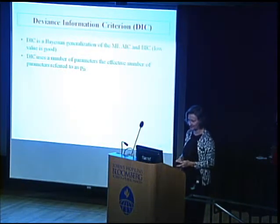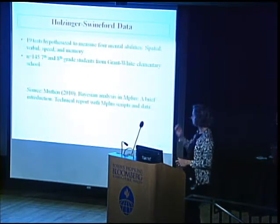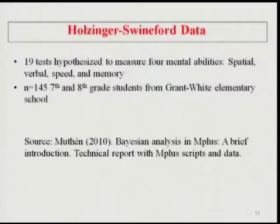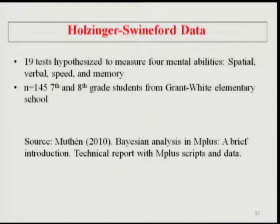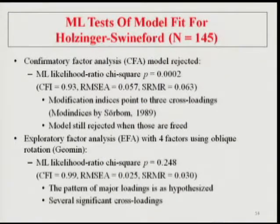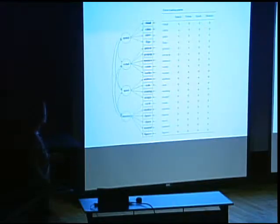We're going to look at a factor analysis example using the Holzinger-Swineford data, which those who've come to other classes have seen a lot — especially Topics 1 and 2. We're looking at all 19 tests hypothesized to measure spatial, verbal, speed, and memory abilities. It's a very small sample: N equals 145. Here's the path diagram with four factors — spatial, verbal, speed, and memory — and the 19 items.